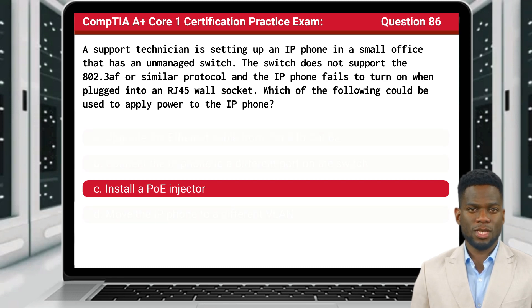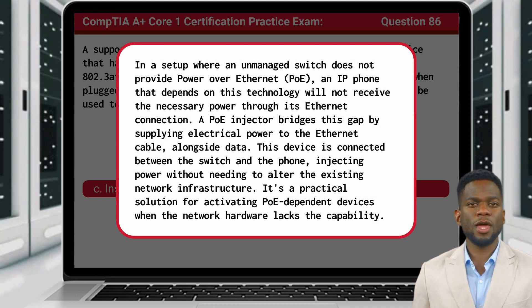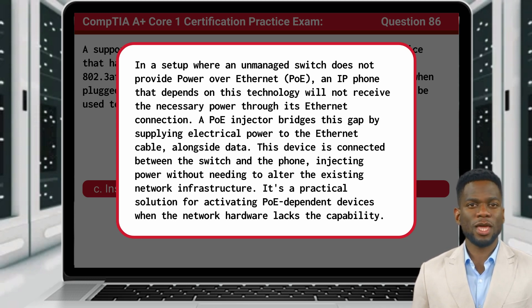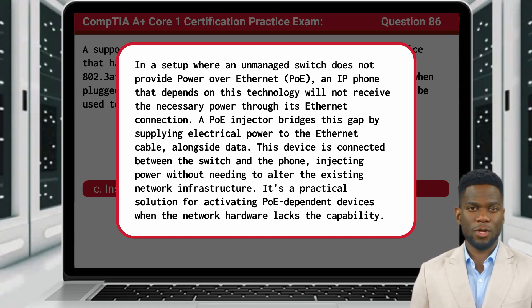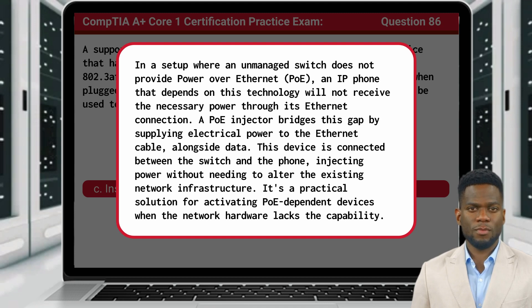The answer is C: Install a PoE injector. In a setup where an unmanaged switch does not provide Power over Ethernet (PoE), an IP phone that depends on this technology will not receive the necessary power through its Ethernet connection. A PoE injector bridges this gap by supplying electrical power to the Ethernet cable. This device is connected between the switch and the phone, injecting power without needing to alter the existing network infrastructure. It's a practical solution for activating PoE-dependent devices when the network hardware lacks the capability.